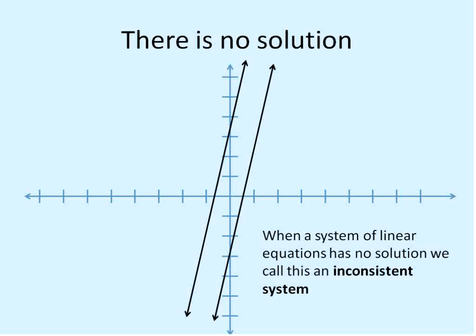A consistent system has a solution. Inconsistent system, no solution. So this is an inconsistent system. There's no solution. These lines will go on forever and ever and never cross.